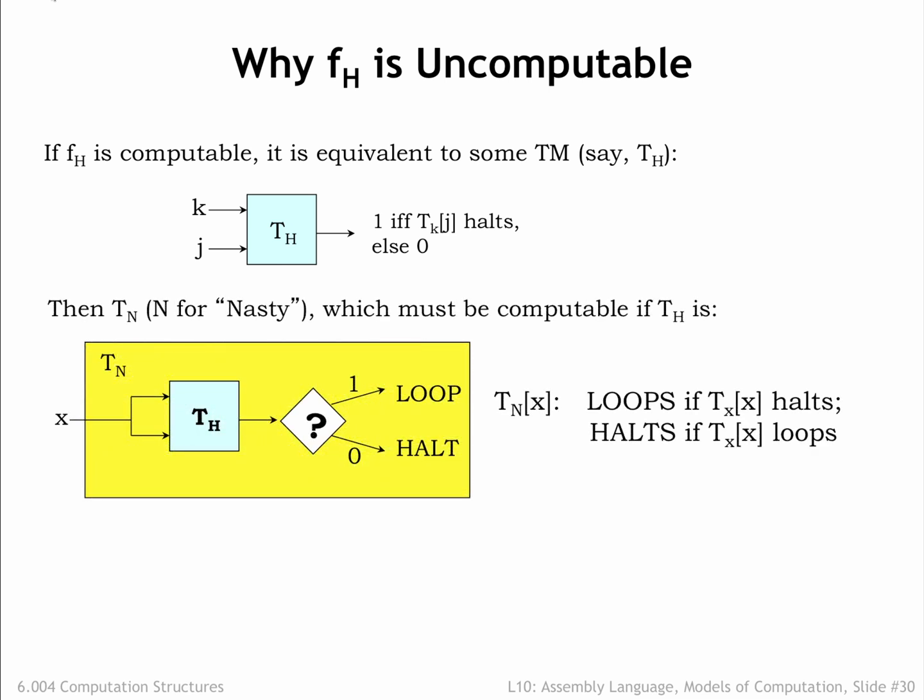So we can use T_H to build another Turing machine, T_N, that processes its single argument and either loops or halts.